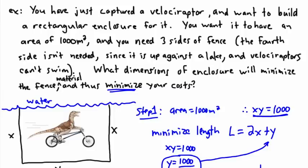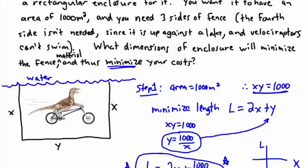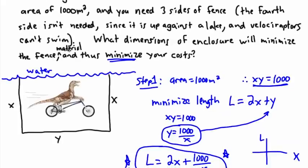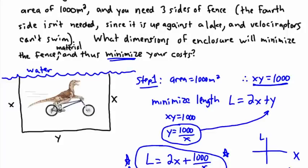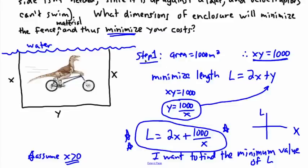In our example, we're trying to minimize the length of fence needed with a fixed area. Step one was to find an equation for what we're looking to minimize, which was the length. It was in two variables, so we used the fact that the area is 1000 to get it down to only one variable.